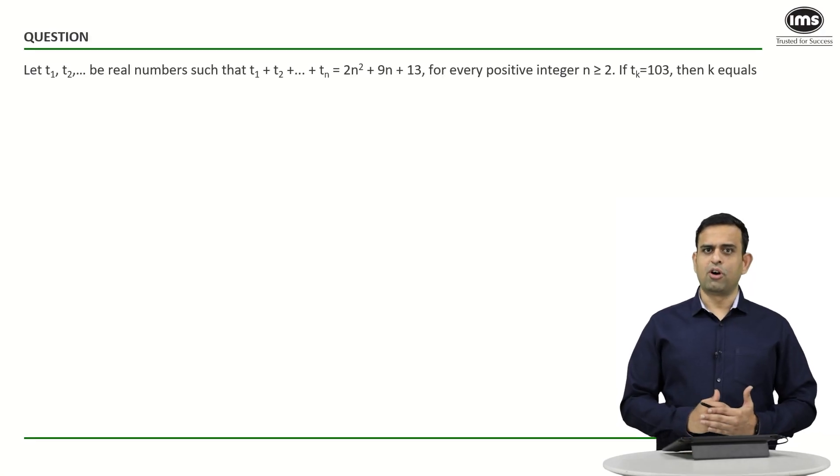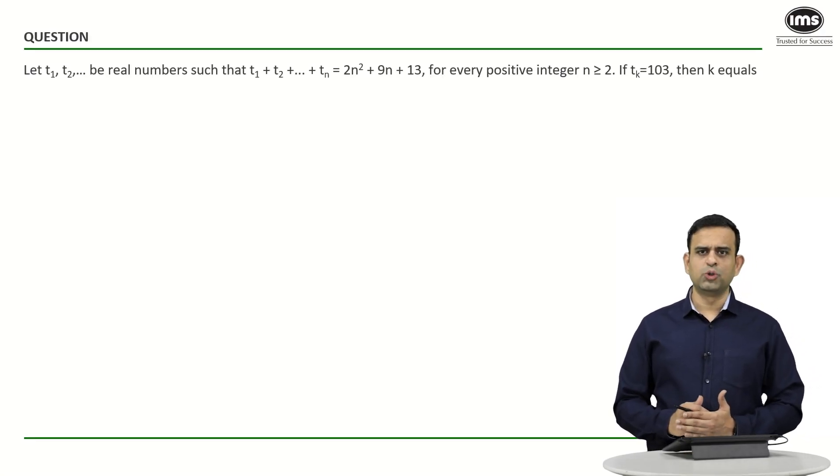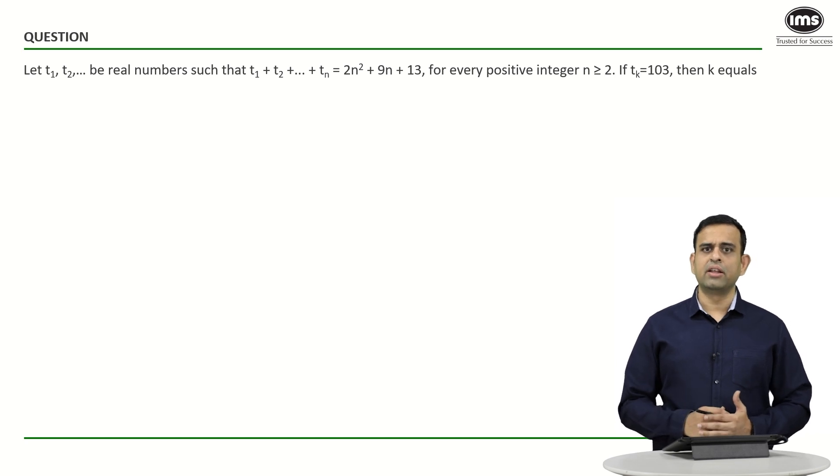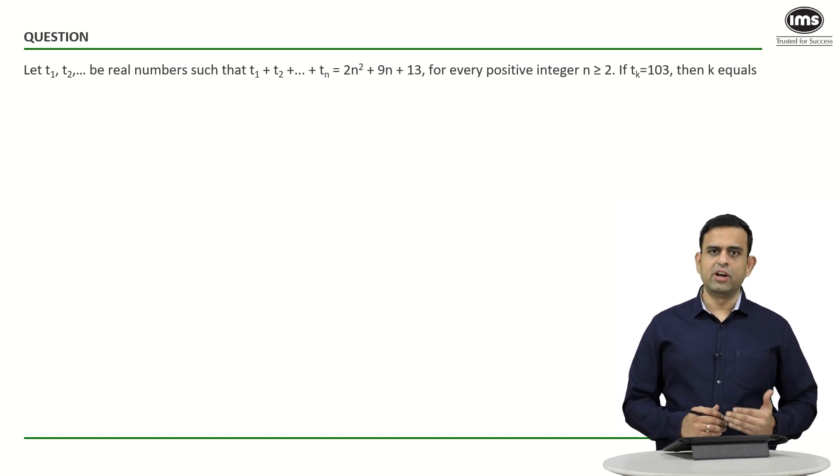In this particular sum on the concept of sequence and series, it is saying that if t₁, t₂, and so on up to tₙ are real numbers such that t₁ plus t₂ up to tₙ